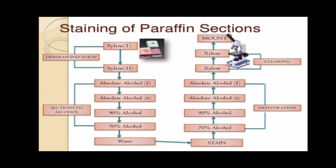Subsequent sections may float off the slide during staining for no apparent reason. Possible causes include dirty or greasy slides, or sections not left in the paraffin oven long enough to dry and be fixed. Sections must be left in the oven for a minimum of 30 minutes before staining. If not feasible, sections should be fixed in a Bunsen burner flame in the same manner as when fixing bacteriologic smears.